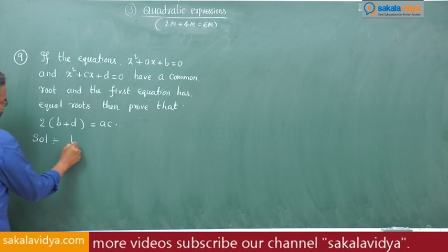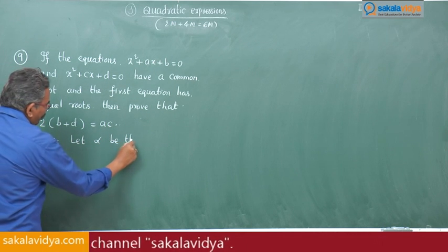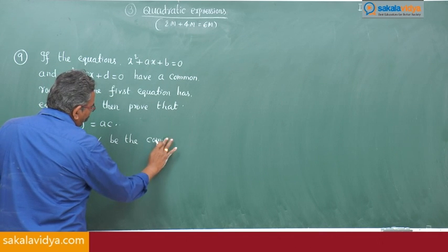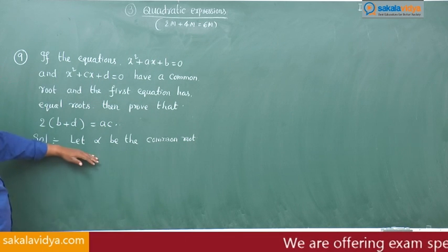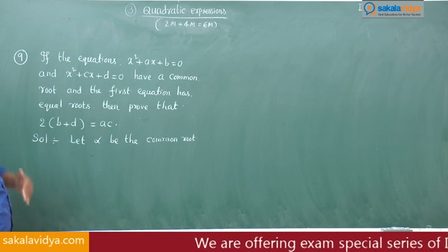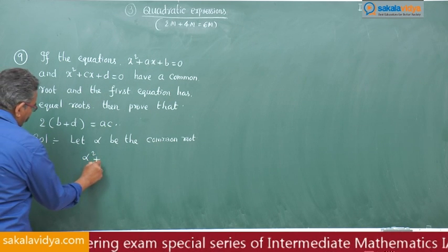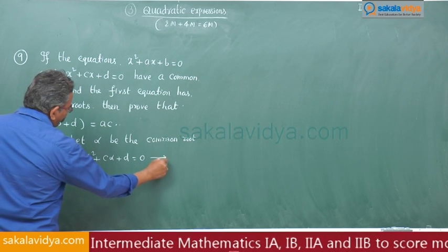Let alpha be the common root. So this alpha satisfies the second equation. So we get alpha square plus C alpha plus D is equal to 0, say equation 1.